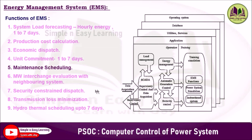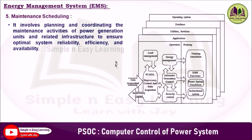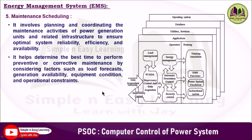The fifth function is maintenance scheduling. It involves planning and coordinating the maintenance activities of power generation units and related infrastructure to ensure optimal system reliability, efficiency, and availability. It helps determine the best time to perform preventive or corrective maintenance by considering factors such as load forecasts, generation availability, equipment condition, and operational constraints.